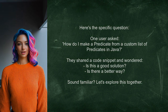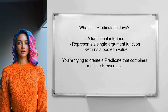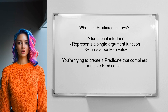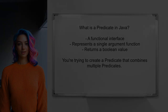Let's explore this together. So what exactly is a predicate in Java? A predicate is a functional interface that represents a single-argument function that returns a boolean value. In this case, you're trying to create one that combines multiple predicates. Let's break down the user's code to understand it better.